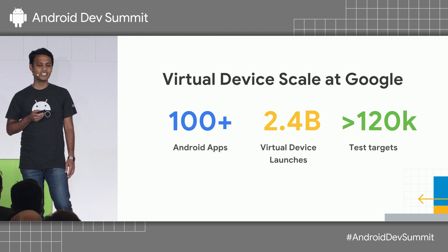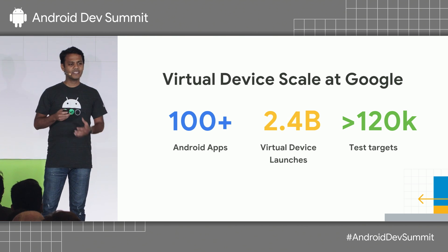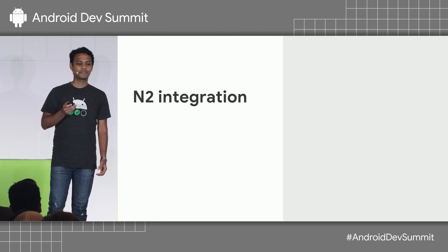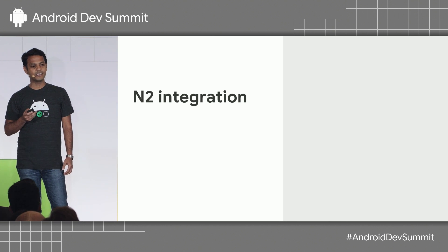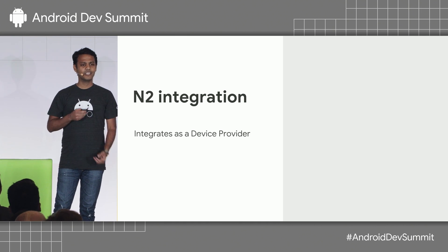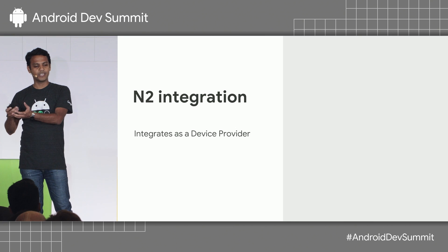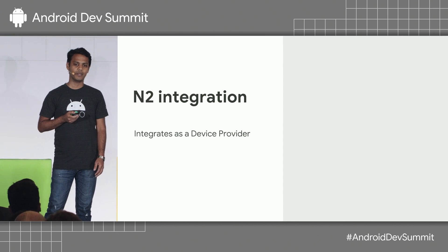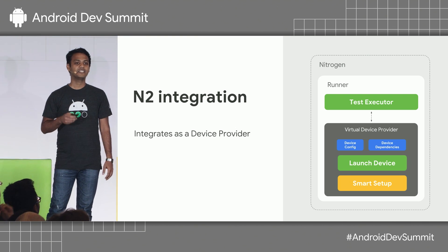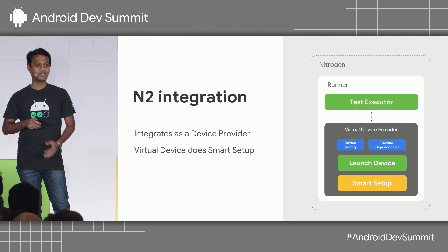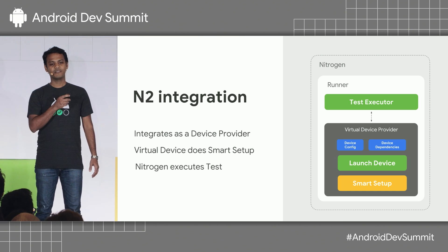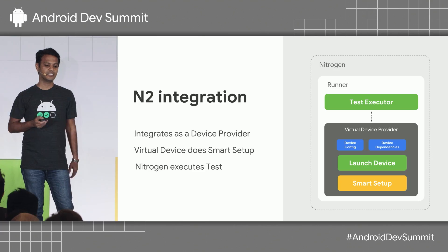Having a great test infrastructure is a must if you want to release high-quality apps. Nitrogen has this concept of device providers. So if you want to run a UI test, you'd invoke Nitrogen. Nitrogen in turn would invoke a device provider — in this case, the virtual device provider — which launches a device, does a bunch of smart setup, returns control back to Nitrogen, which actually goes and executes the test. Once the test is done, it tears down the device. In that case, you get a completely stable environment which is launched by Nitrogen, runs the test, and shuts it down.